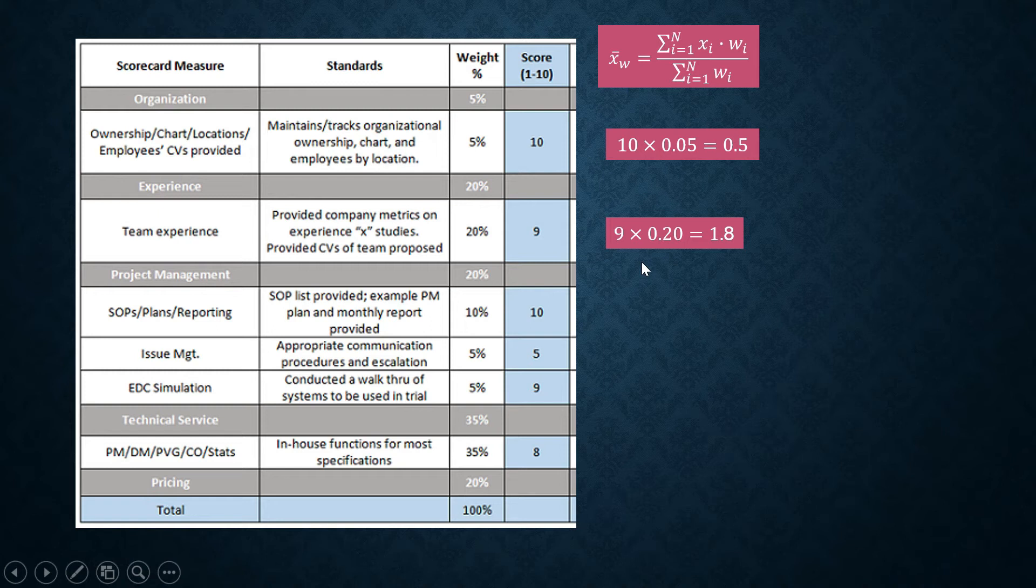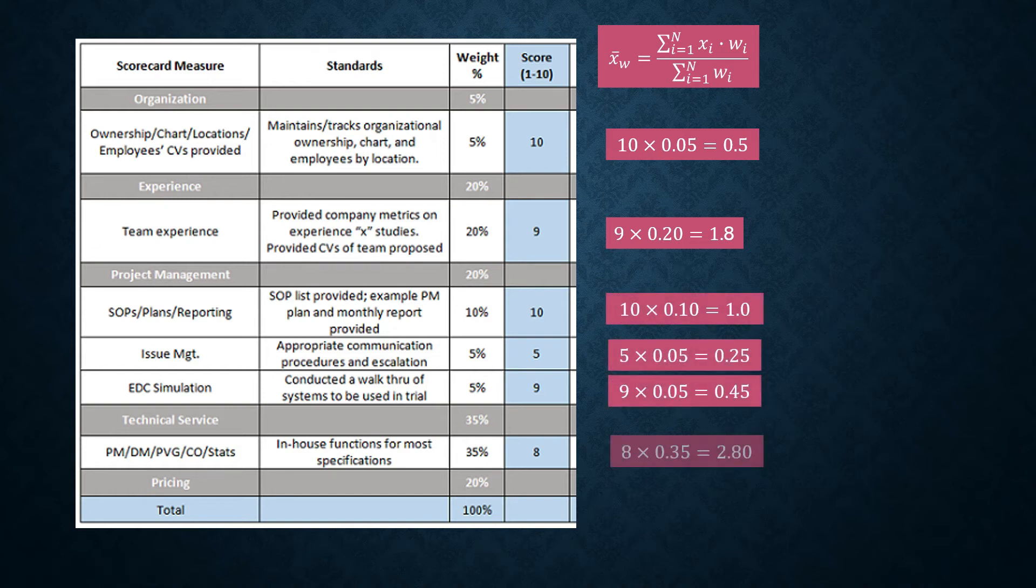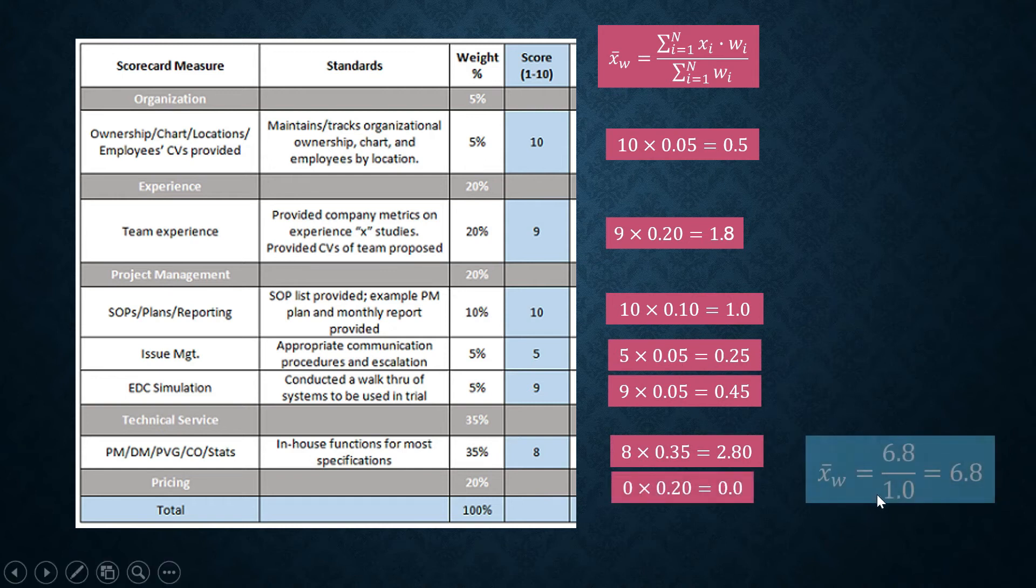With the second criterion, the score of the agency is 9. That's x sub 2 times the weight of this criterion which is 20% or 0.2. You will do it for all the scores. And then you will get the sum. The sum is 6.8. The sum of all of this is 6.8.